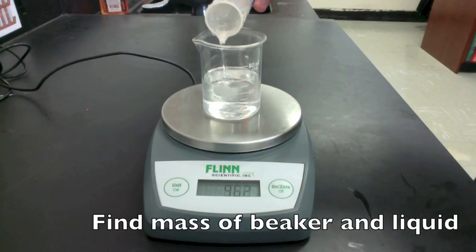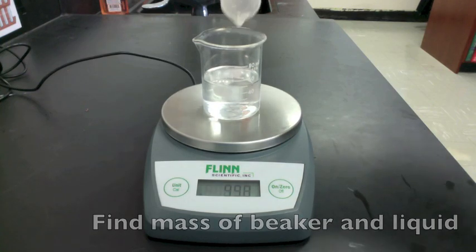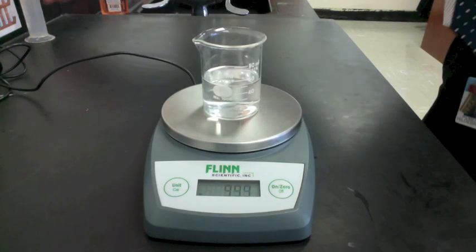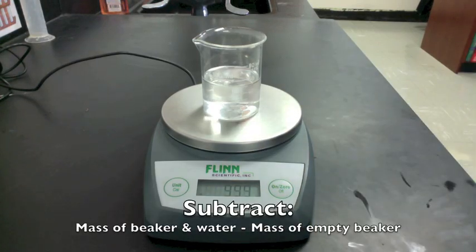This is the mass of the beaker and the liquid. To find the mass of just the liquid, you have to subtract.